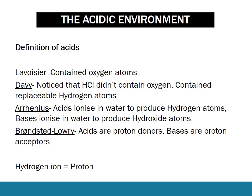Let's quickly look at the definitions of acids. We start with Lavoisier, who was the first to realize that elements were their own thing. He was the first to synthesize pure oxygen and said that acids must contain oxygen — but he was wrong. Davy noticed that hydrogen chloride didn't contain oxygen and said there just has to be some sort of replaceable hydrogen. Arrhenius added that acids need to ionize in water to produce hydrogen atoms, and bases ionize in water to produce hydroxide. This definition is almost completely true, but the Bronsted-Lowry definition is much more advanced — it says acids are proton donors and bases are proton acceptors, where a proton is just a hydrogen ion. You need to know these four definitions and who they were made by.